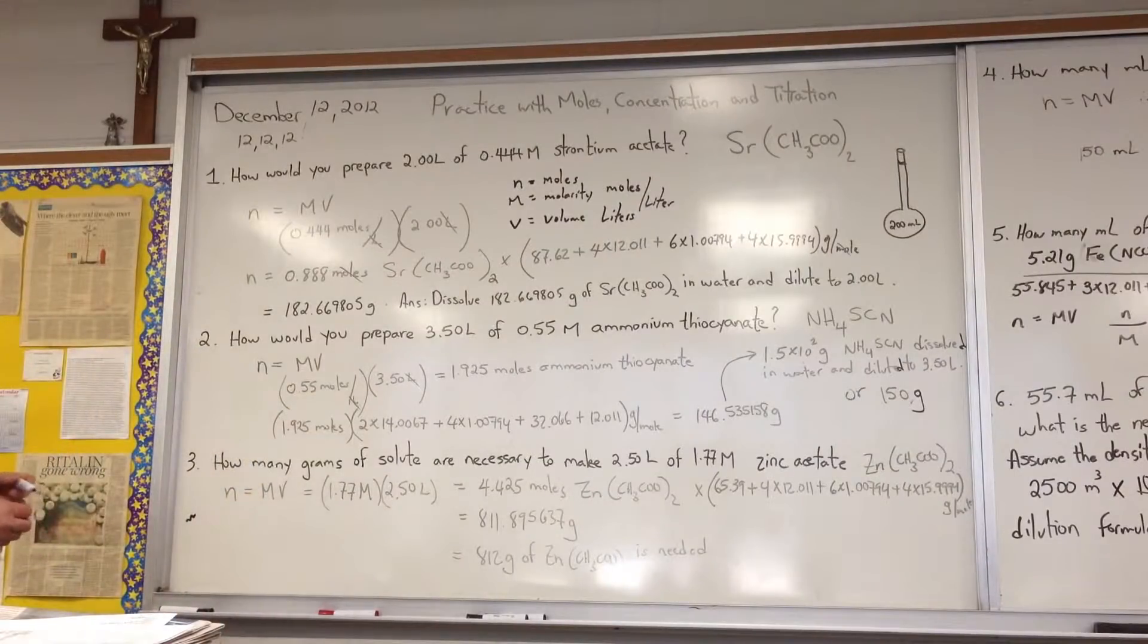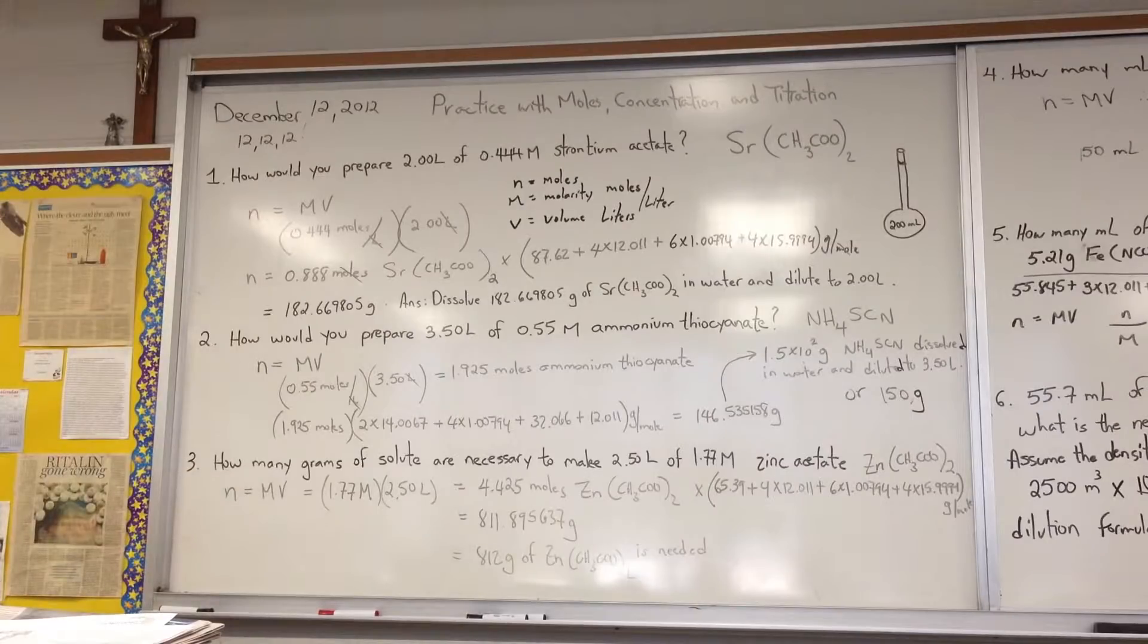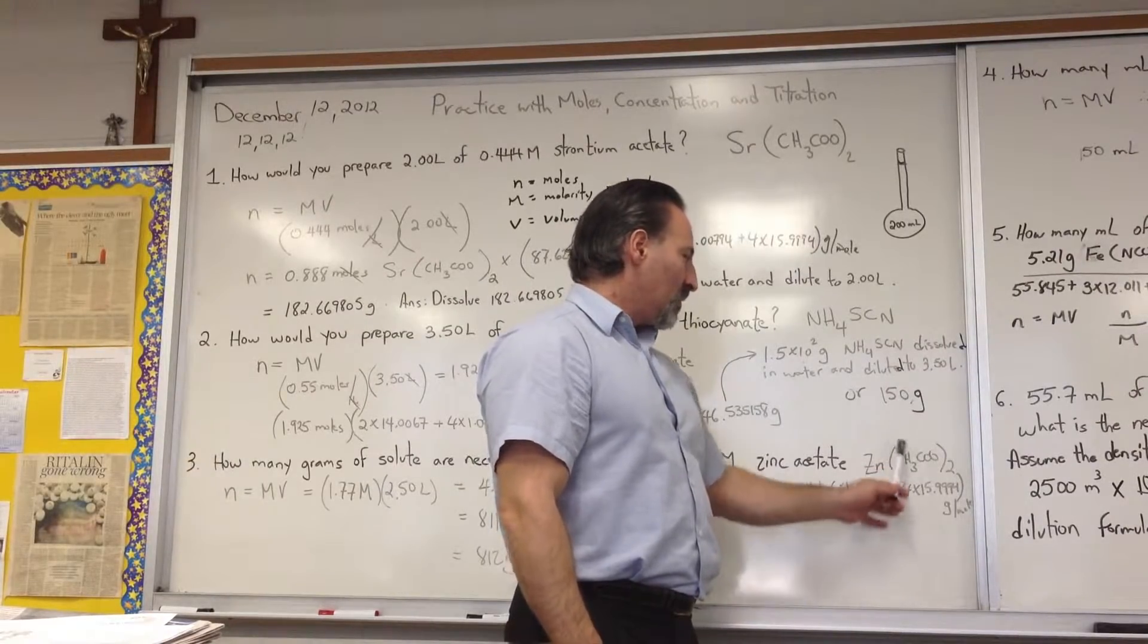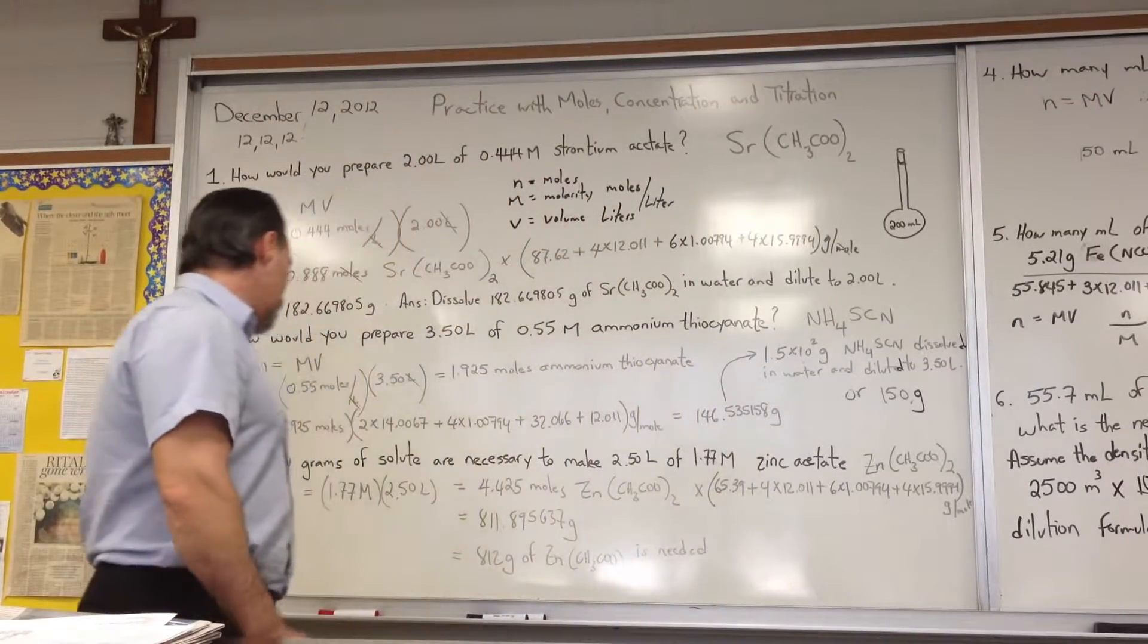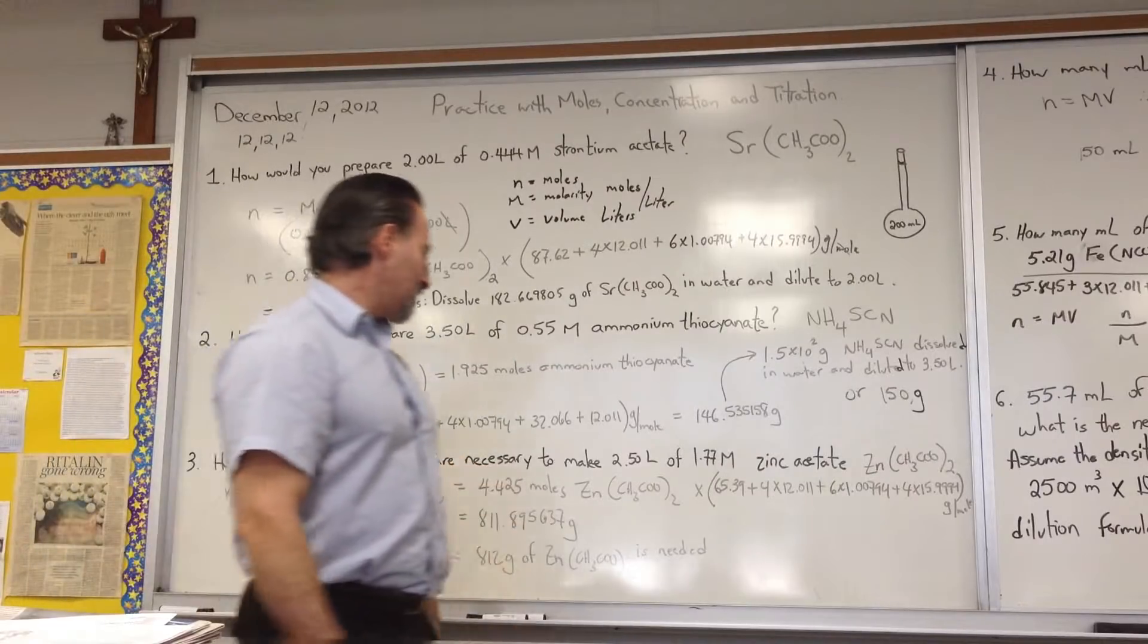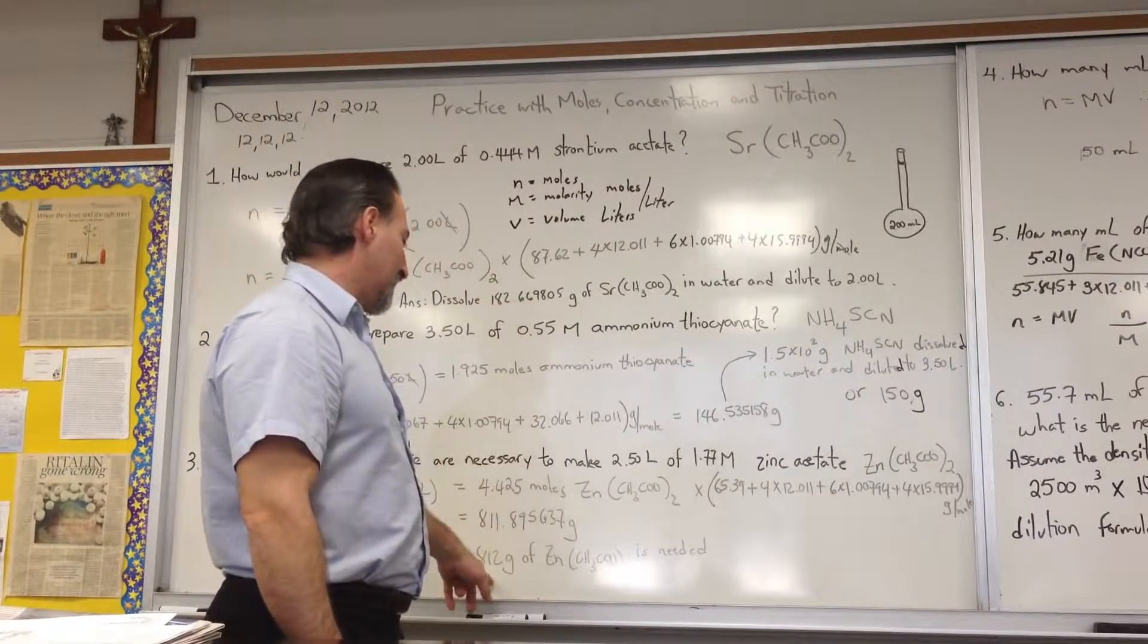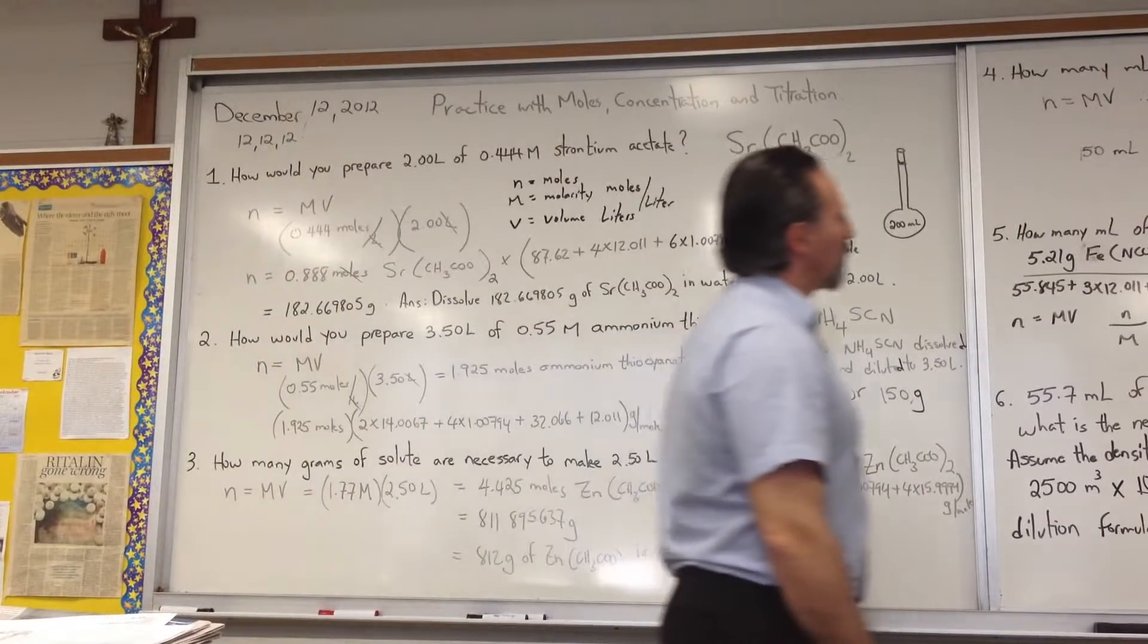Third question is how many grams of solid are necessary to make 2.5 liters of 1.77 molar zinc acetate? The formula of zinc acetate is zinc with two acetate molecules. Zinc is a plus two charge. Acetate is a minus one charge. We use our same formula, 1.77 times 2.5 liters, 4.4 moles of zinc acetate, times its molar mass, gives you how many grams of zinc acetate, and then we're only allowed three significant figures, so I would report 812 grams of zinc acetate as needed.